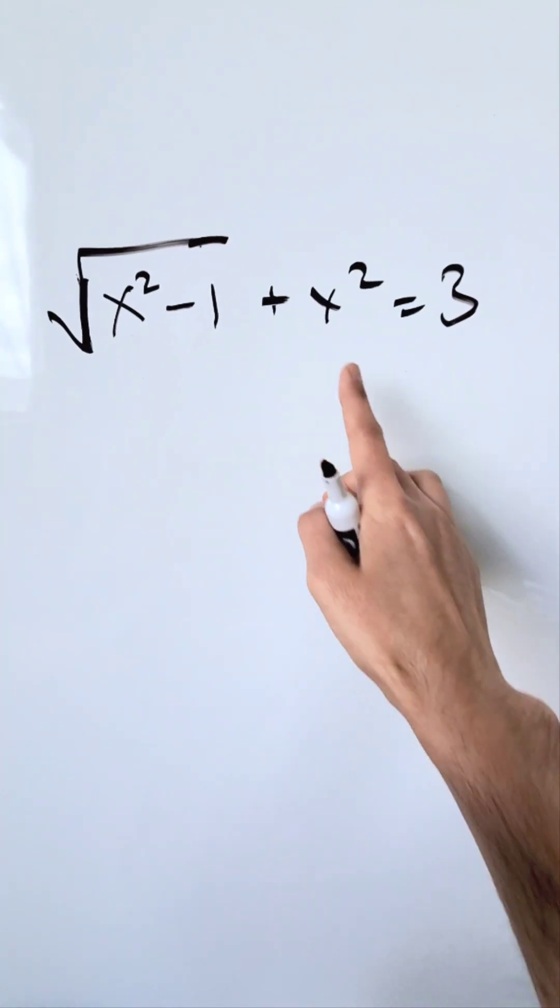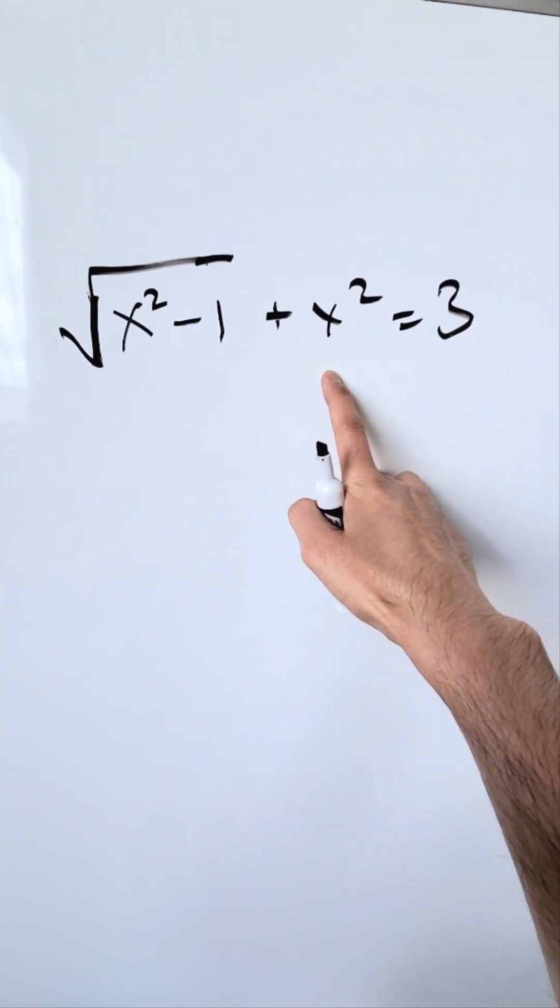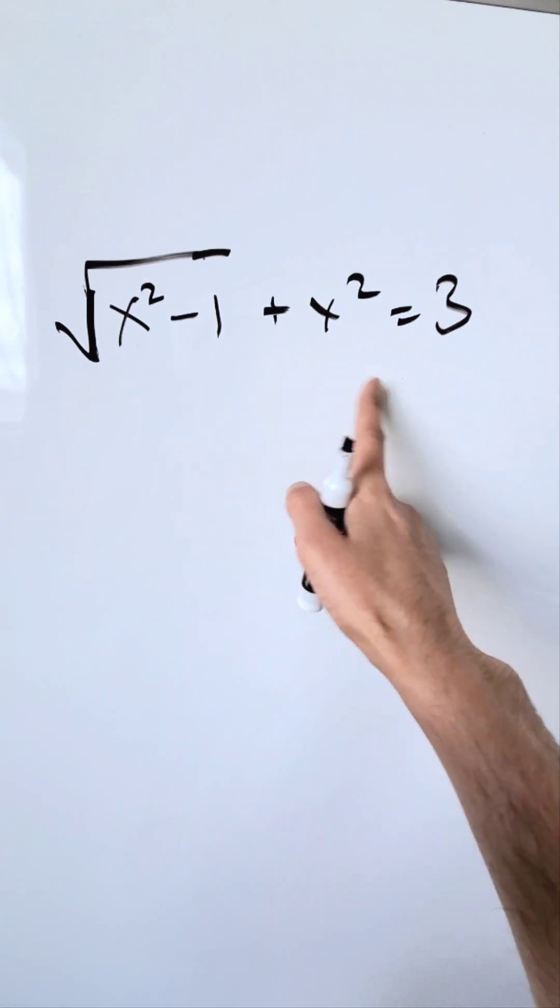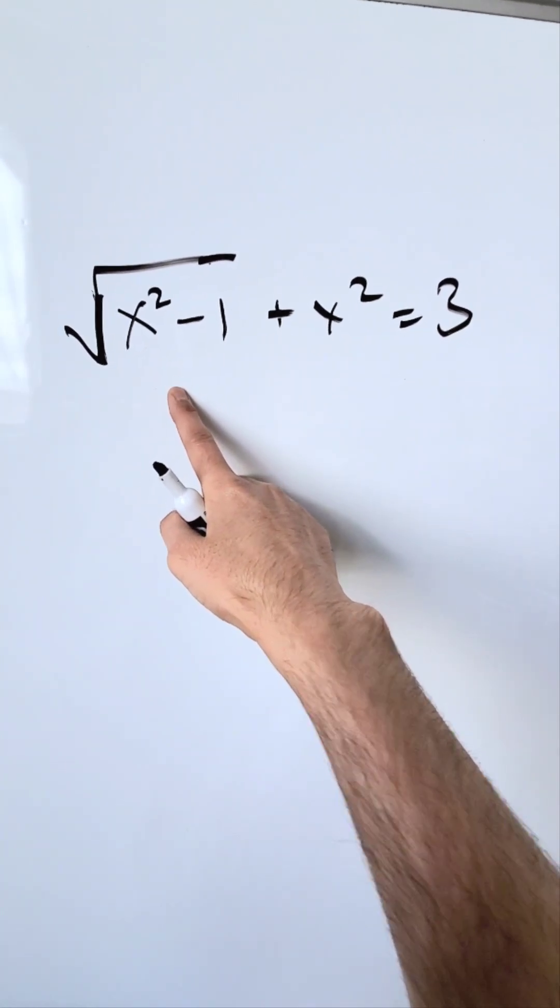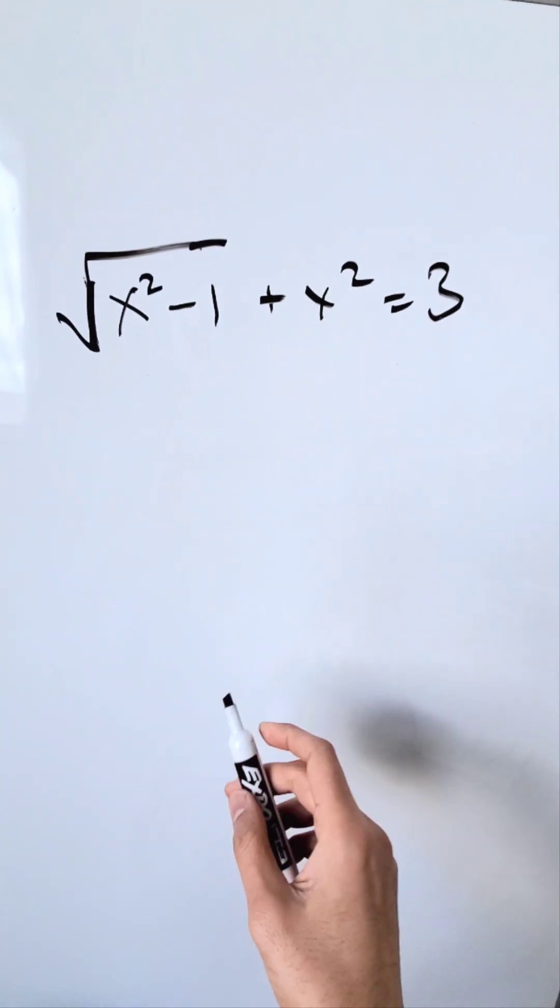Look at this expression. We're going to find the actual values of x that satisfy the equation: √(x²-1) + x² = 3. How can we do it?